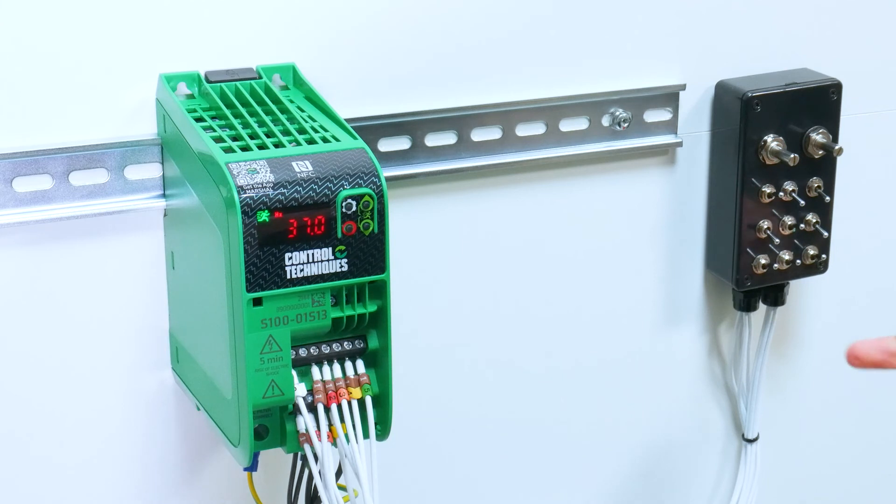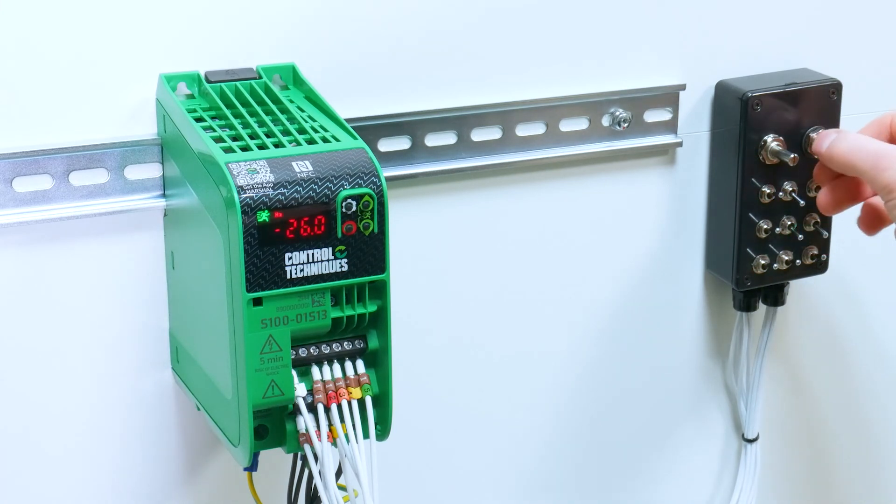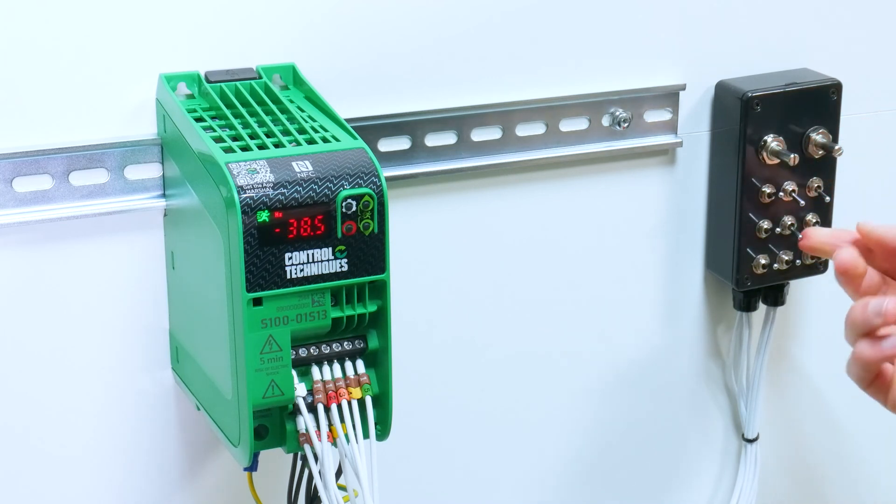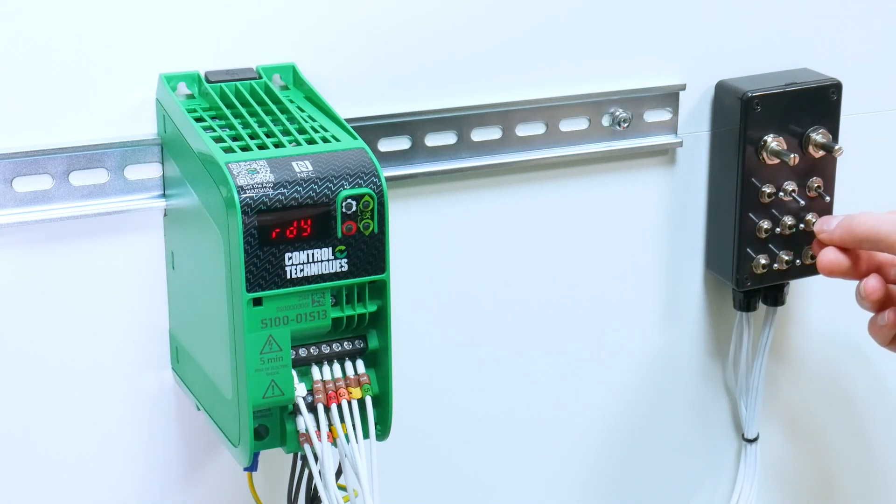I can then remove the run forward signal and engage the run reverse, and the motor will run in reverse. Removing the run reverse, the display will show decel until it stops. Then removing the enable, I'll go back to the inhibit state.